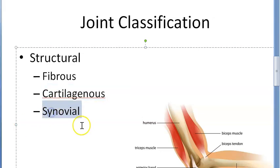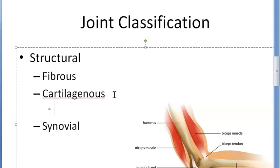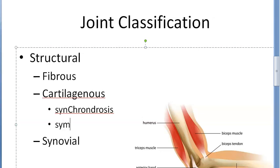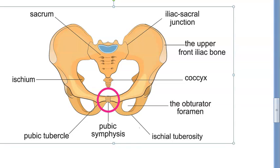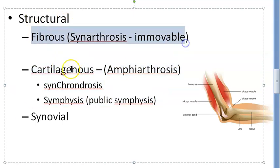Cartilaginous joint seems a little more mobile. Synovial sounds really mobile. Cartilaginous joints - you should know the primary cartilaginous joint or synchondrosis, and then the secondary cartilaginous joints or symphysis. Symphysis is like pubic symphysis, you would have heard. Synchondrosis and symphysis. Symphysis - the pubic symphysis - is in your pelvic bone. You can see the pubic symphysis in your pelvis. Is this going to be mobile? Slightly mobile. This is amphiarthrosis. So cartilaginous joint is amphiarthrosis; fibrous joint is synarthrosis - immovable.